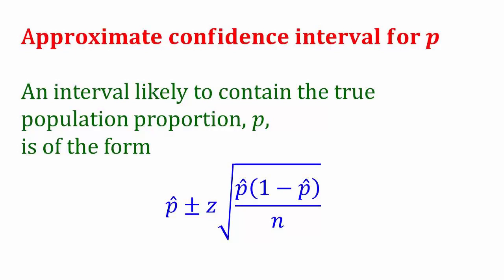If you look in the formula sheet that you get with the exam, you will see that an interval likely to contain the true population proportion is of the form p hat plus or minus this margin of error. This margin of error has two components: a z component, and the square root of p hat times one minus p hat over n, which is a bit like the standard deviation, except that it's got p hat instead of p.